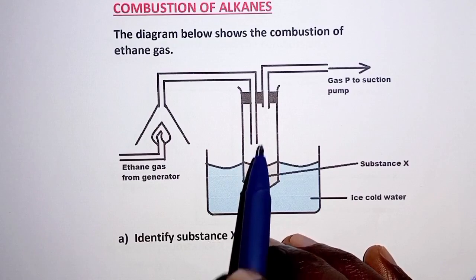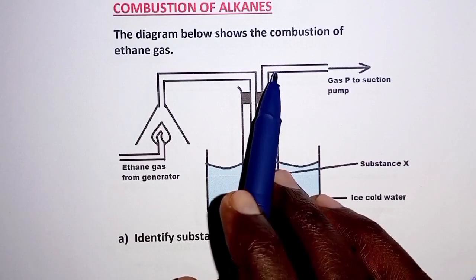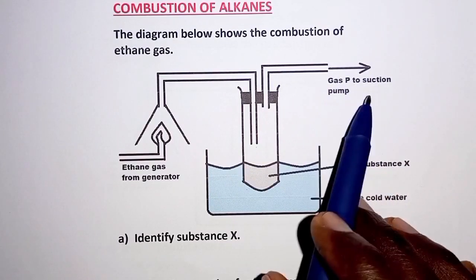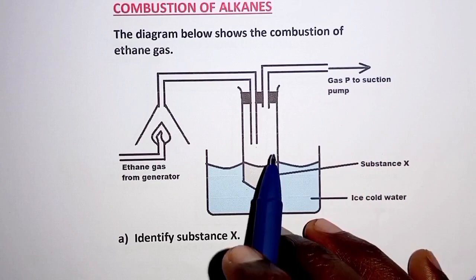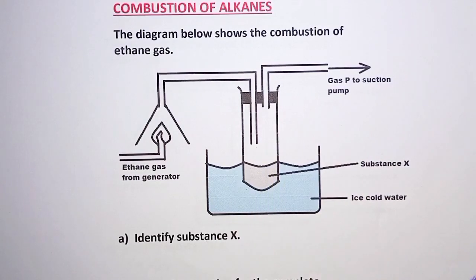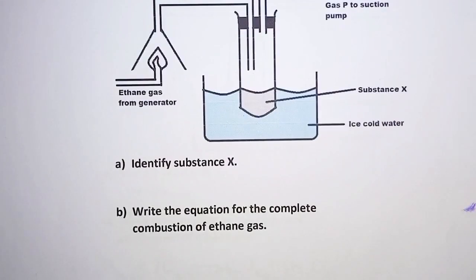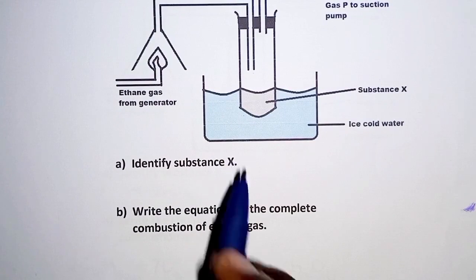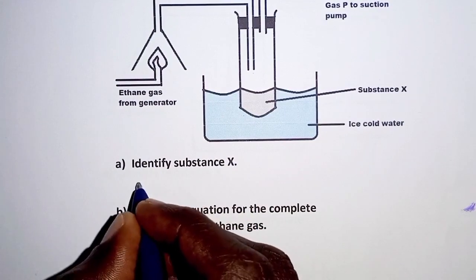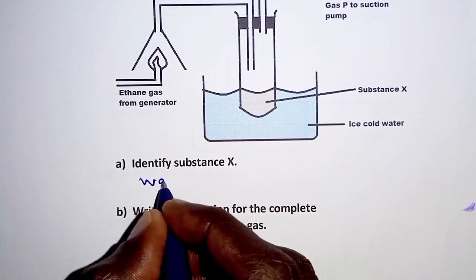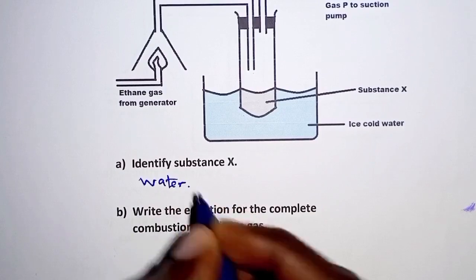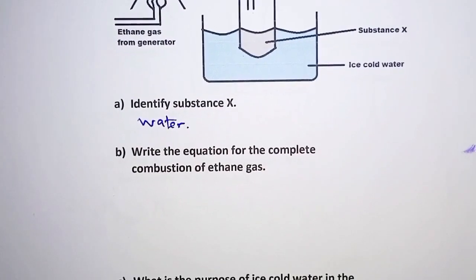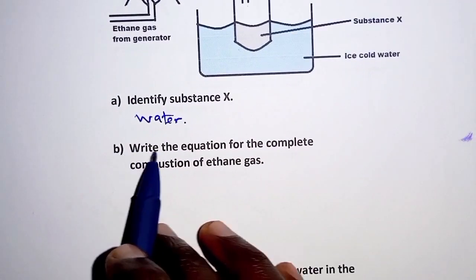The carbon dioxide will proceed on as gas to the suction pump. So with that brief description, we can identify that substance X is condensed water.